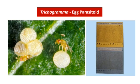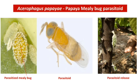The next one is Acerophagus papayae, commonly known as the papaya mealybug parasitoid. This is a biocontrol agent against mealybugs. Mealybugs are pests which cause damage to several economic crops and papaya. This parasitoid is used to control mealybugs in papaya.